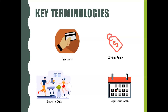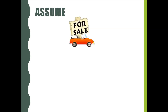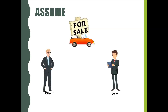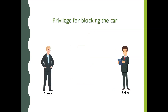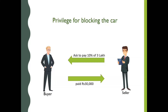Let's understand all of this with an example. Assume you want to buy a car from your friend who wants to sell it. But you are looking to buy it after 3 months as you don't have the required money right now, and your friend agrees to sell you that car after 3 months at 3 lakhs. Now your friend needs to block that car for you, and for this privilege your friend is asking you to pay 10% of 3 lakhs now — that is 30,000 rupees. You have paid the 30,000 rupees to your friend and he is waiting for the day when you will come and buy it. You can buy on the last day of the set 3 months or any time before it.